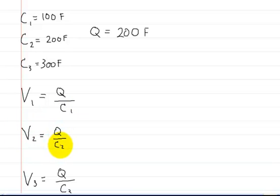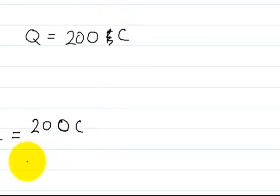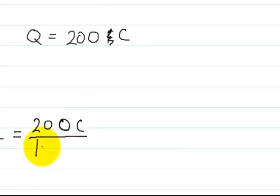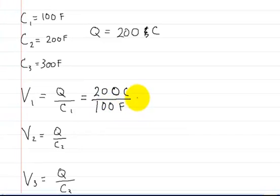Let's plug in the values. The charge is 200 coulombs divided by C1, which is 100 farads. So V1 has a voltage of 2 volts.